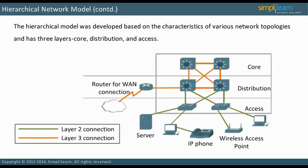The image on the slide depicts how each layer fits together in the network. The hierarchical model was developed based on the characteristics of various network topologies. It has three layers: core, distribution, and access. There are two types of connections that link the devices — layer 2 and layer 3 connections. Both these connections are present between the devices. Note that layer 3 connections end at the distribution layer; below that, all connections are layer 2.